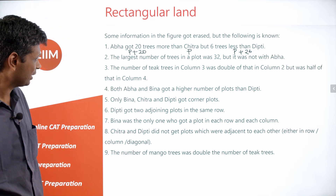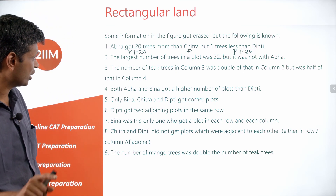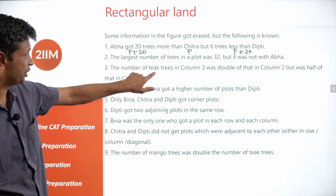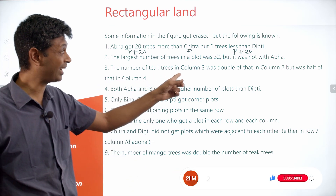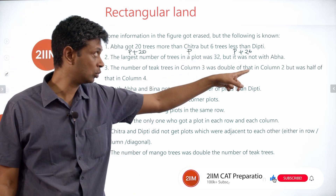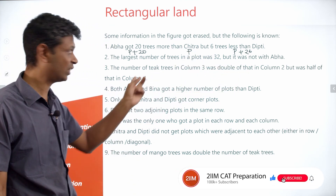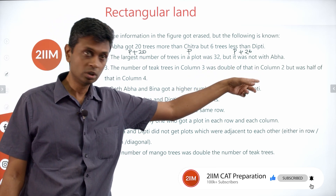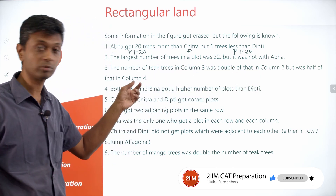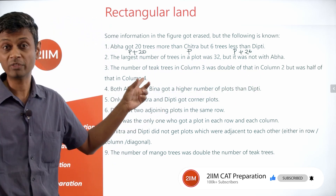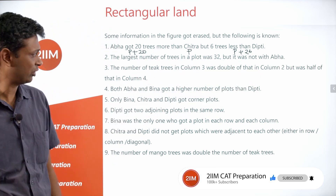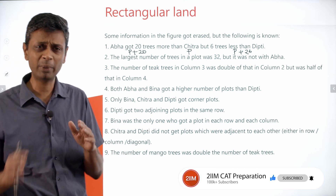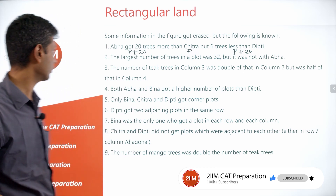The teak constraint is also very interesting: the number of teak trees in column 3 was double that in column 2 but half that in column 4. If we assume a variable M for column 2, column 3 is 2M and column 4 is 4M. That captures three cells with the same variable, which is very useful.